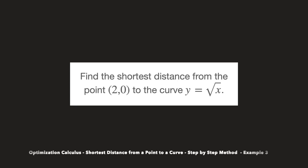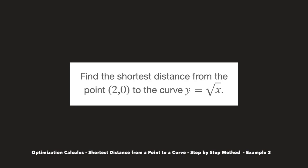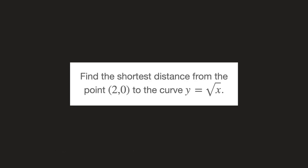Hi everyone. In this video I work through an optimization problem, which is one of the must-knows when studying optimization with calculus. We're told to find the shortest distance from the point with coordinates to the curve y equals to the square root of x. Go ahead and press pause and try working through this on your own, or let's get started.